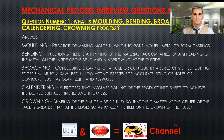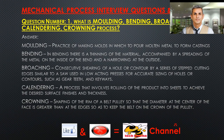Molding: the practice of making molds in which to pour molten metal to form castings. Bending: in bending there is a thinning of the material, accompanied by a spreading of the metal on the inside of the bend and a narrowing at the outside. Broaching: consecutive shearing of a hole or contour by a series of stepped cutting edges similar to a saw, used in low-acting presses for accurate sizing of holes or contours such as gear teeth and keyways.